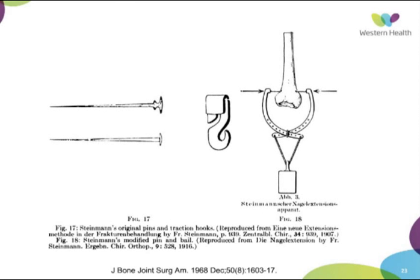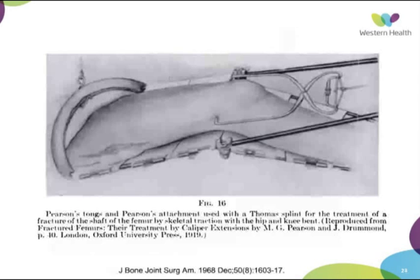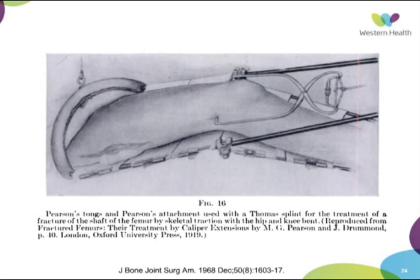Steinmann was the first person to use pins. He used his pins and traction hooks to reduce fractures — that was in 1916. Afterwards, Pearson's stirrup and attachment used pins and the method to reduce fractures. Then Kirschner improved the traction bow, and the Kirschner wires were used for reduction of fractures. This became the main treatment for a lot of fractures during the wars.